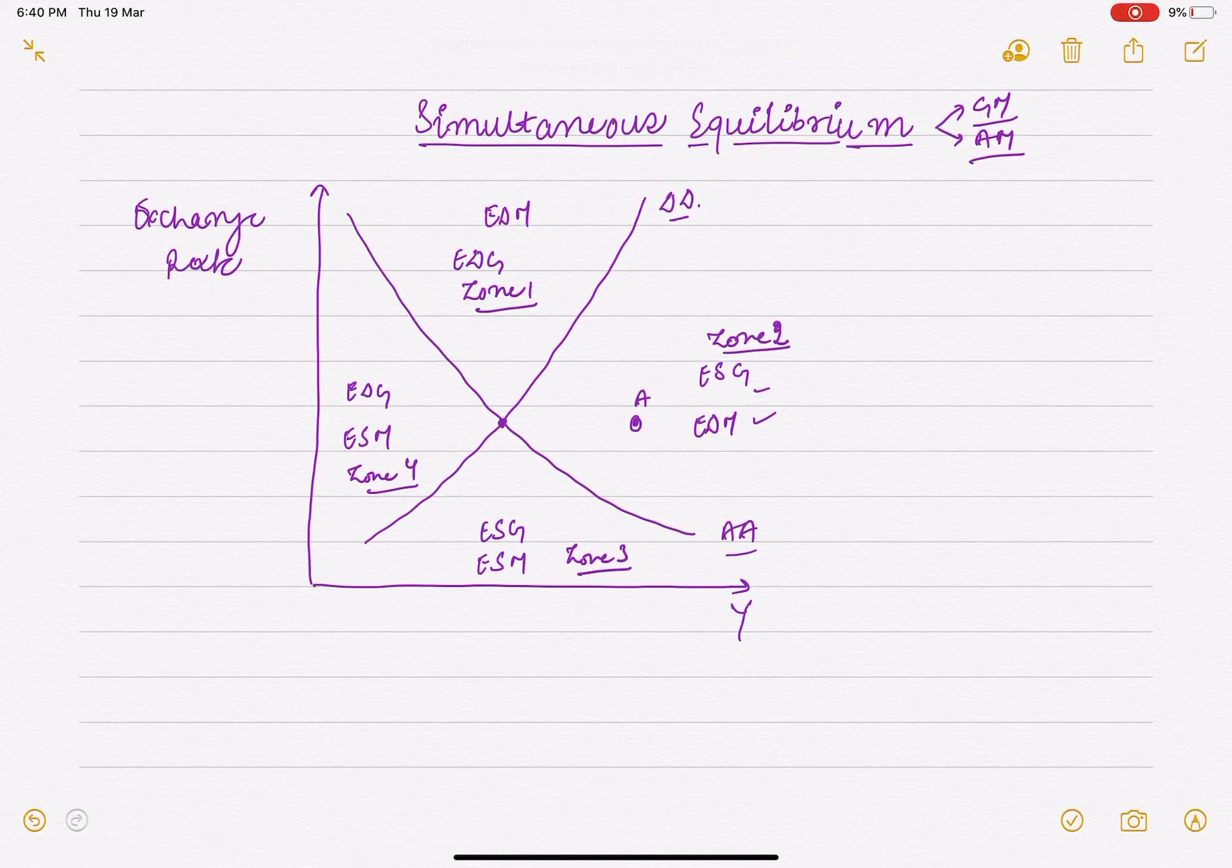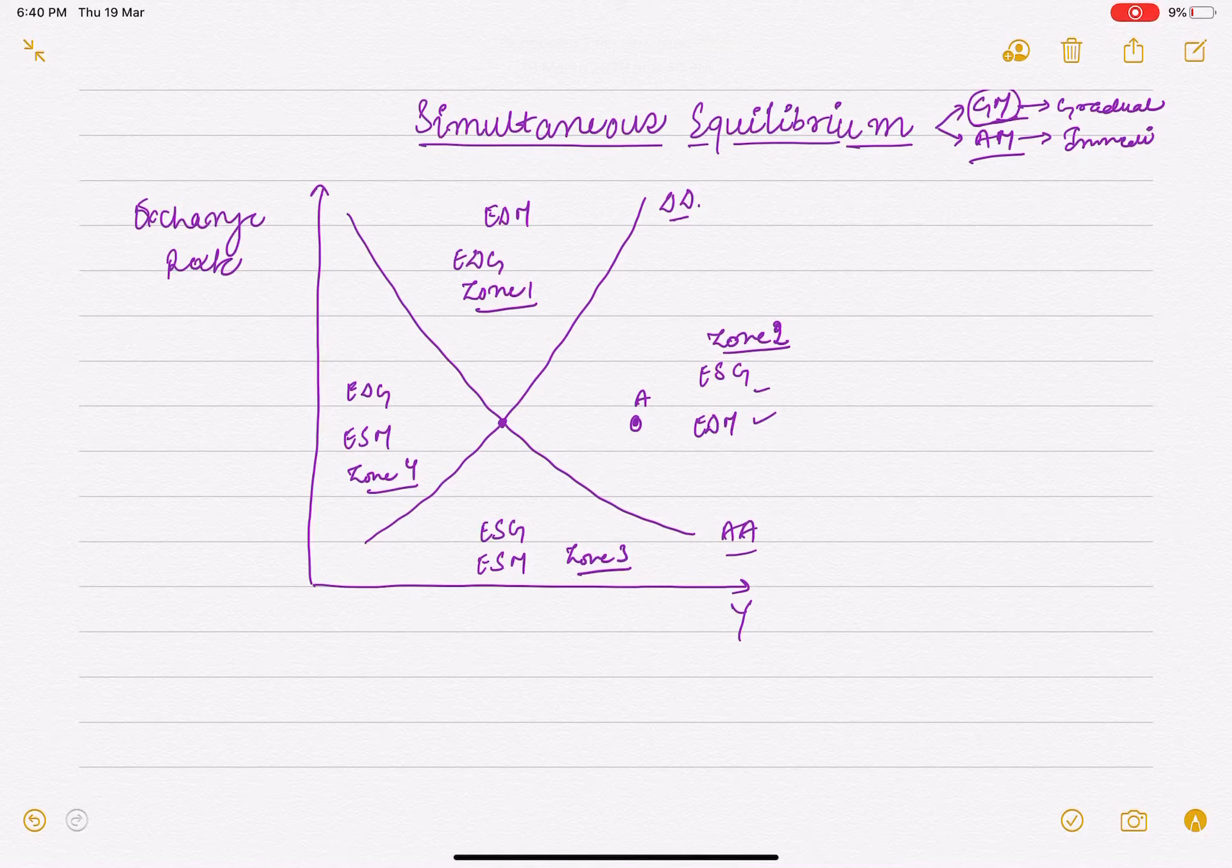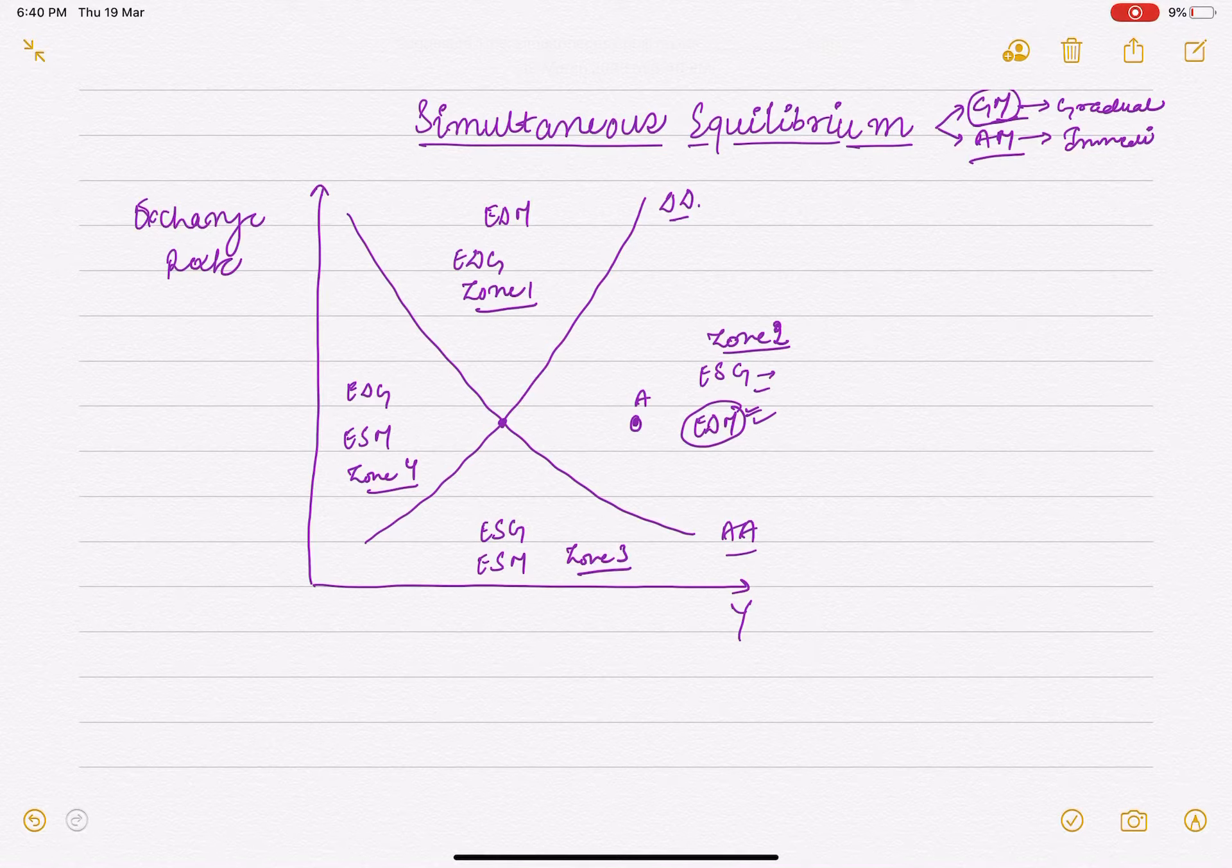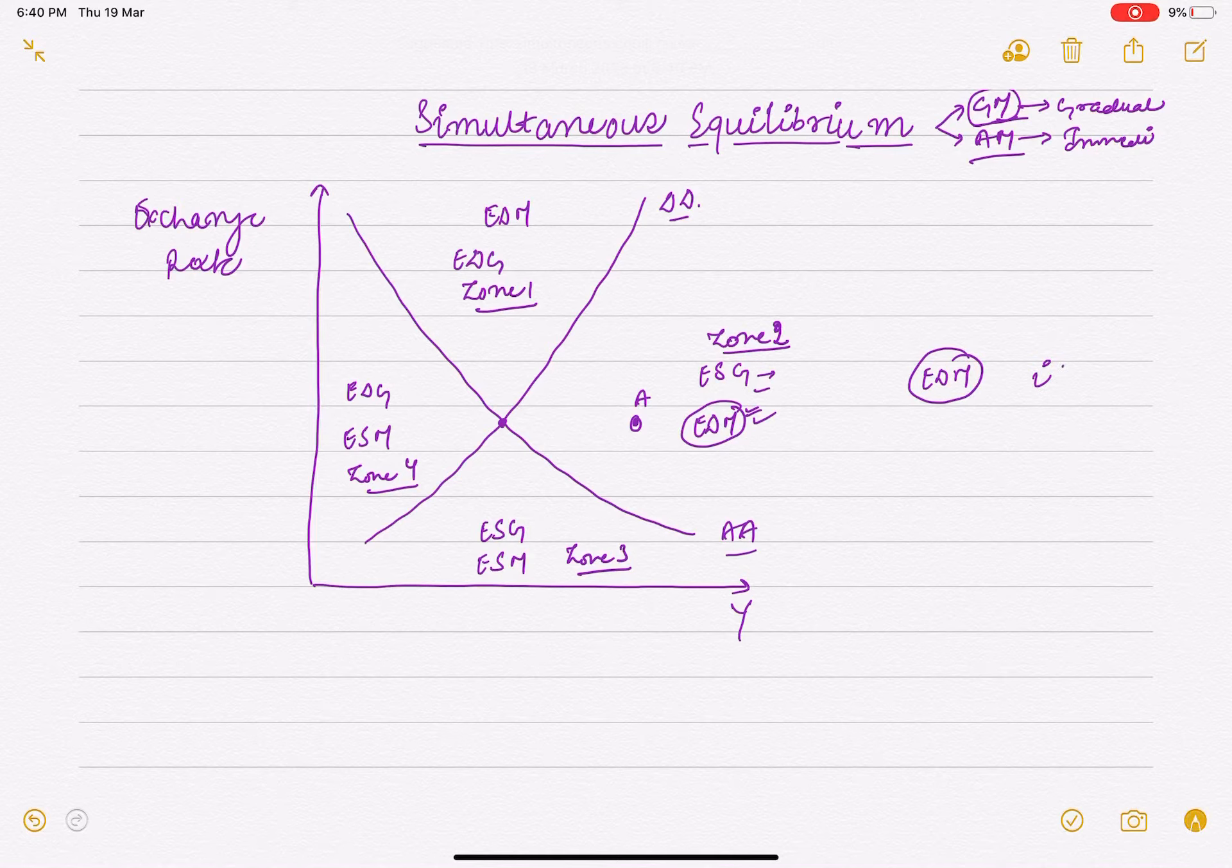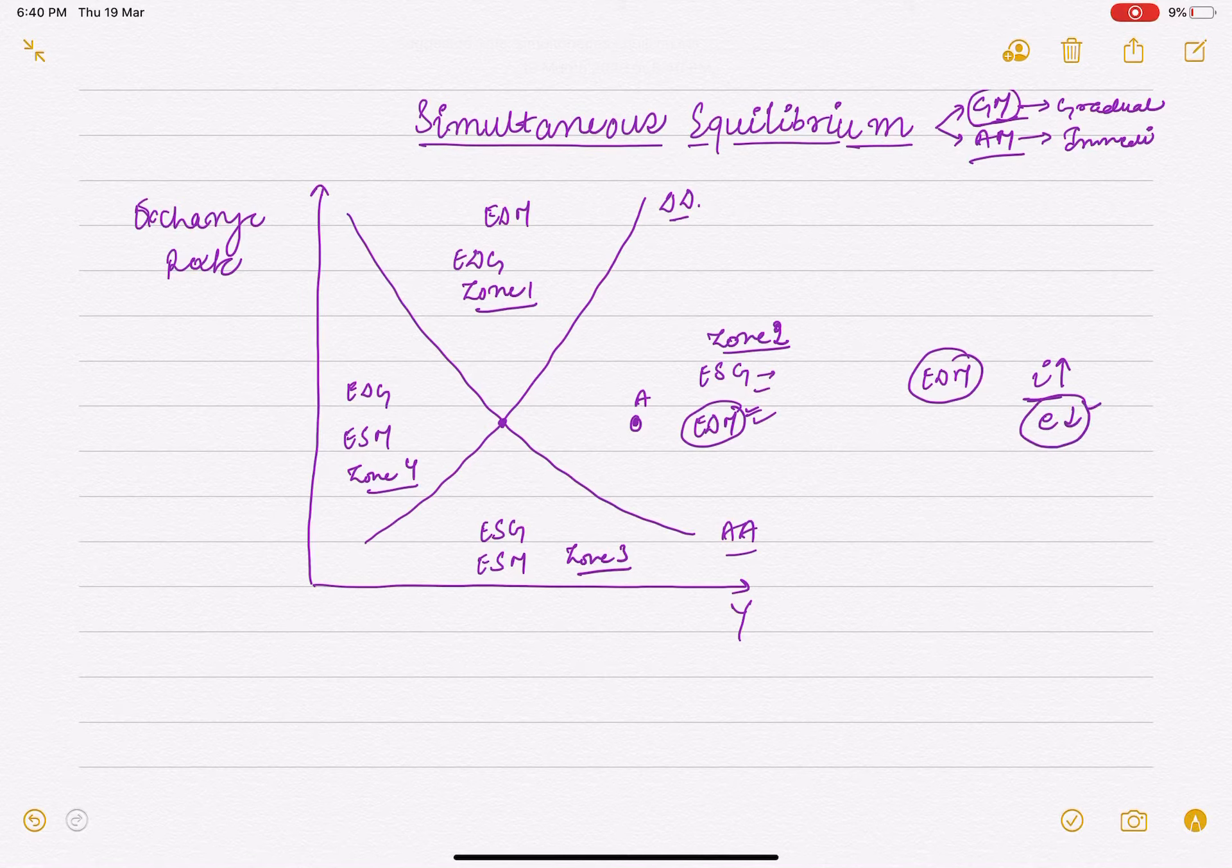Goods market adjustment is gradual while asset market adjustment is immediate. In the asset market where there is excess demand for money, the interest rate will increase to maintain interest parity condition, which will cause the exchange rate to decrease from point A, reaching a new point.